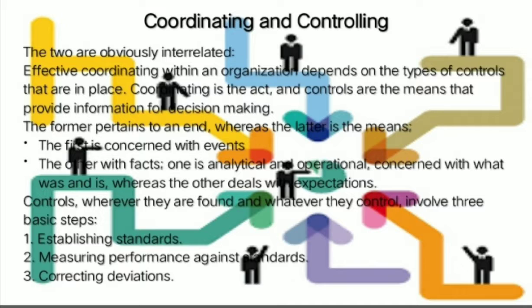Coordinating and Controlling. Obviously, the two are interrelated. Effective coordinating within an organization depends on the types of controls that are in place. Coordinating is the act, and controls are the means that provide information for decision-making. So the coordinating pertains to an end, whereas controlling is the means. The first is concerned with events, and the other with facts.